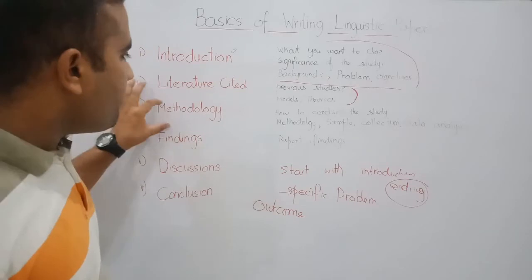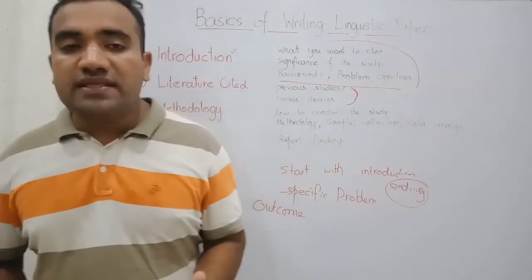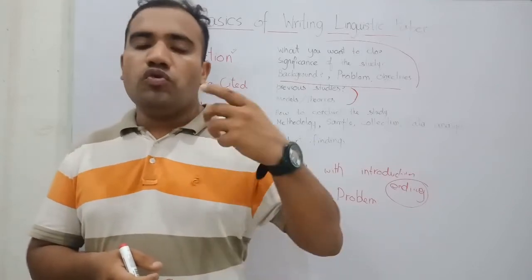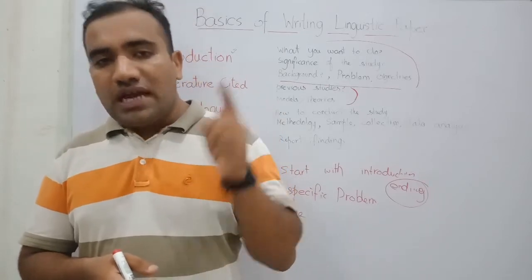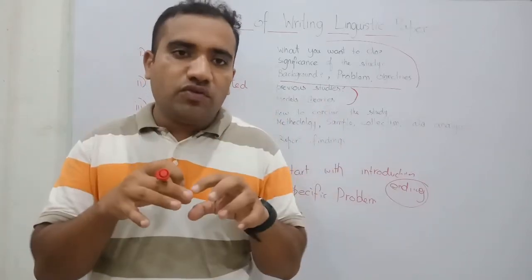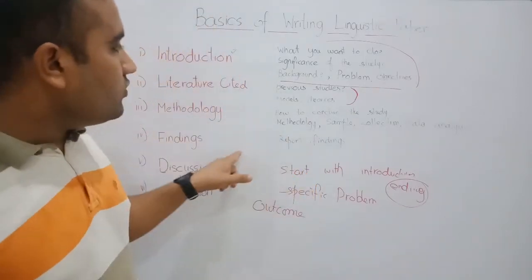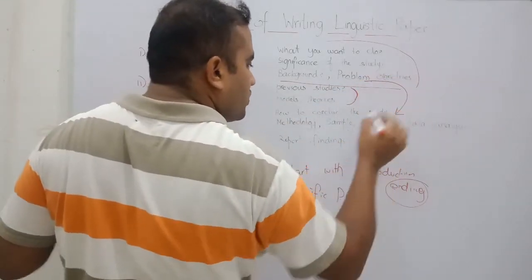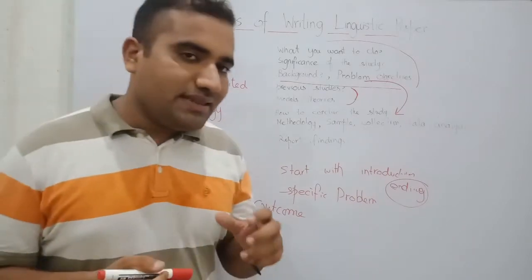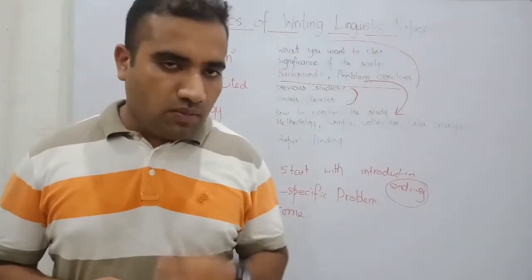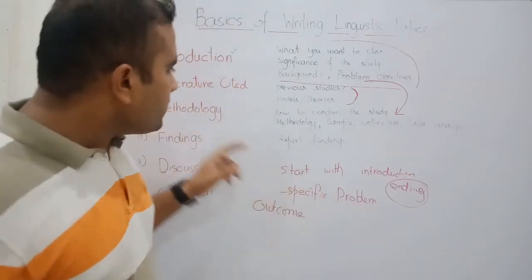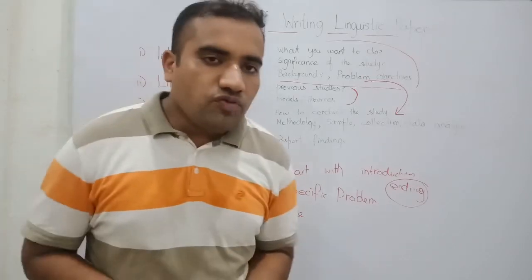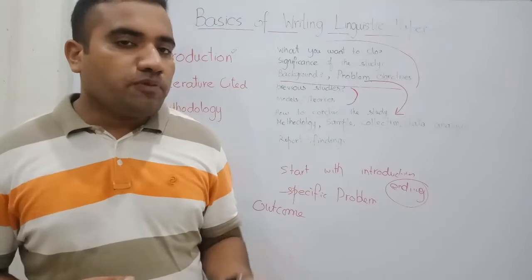The next is methodology. Methodology is very important — it is the way that you want to do the research. You choose a topic, you want to work on that topic, and you have to tell what is the way through which you want to achieve results. You have a problem, and for the solution of that problem you choose a methodology that will give the solution. In the methodology section, you tell how to conduct the research and how you want to solve that particular problem.